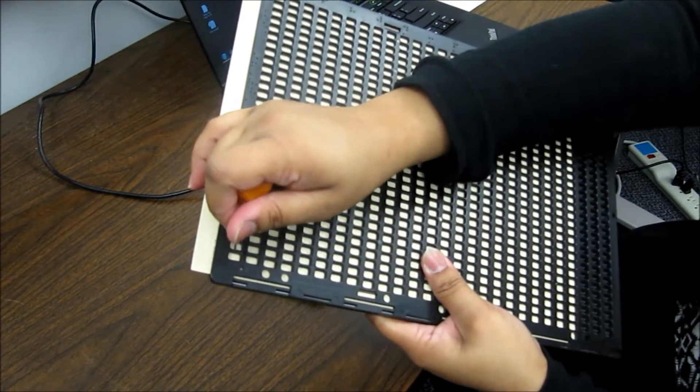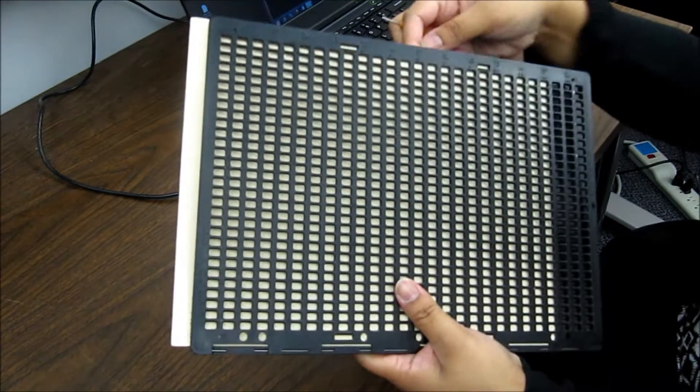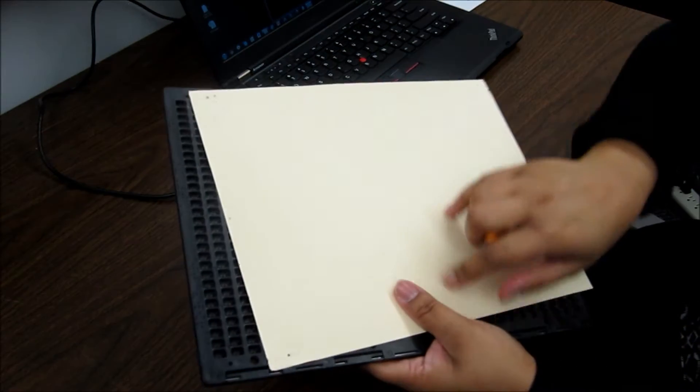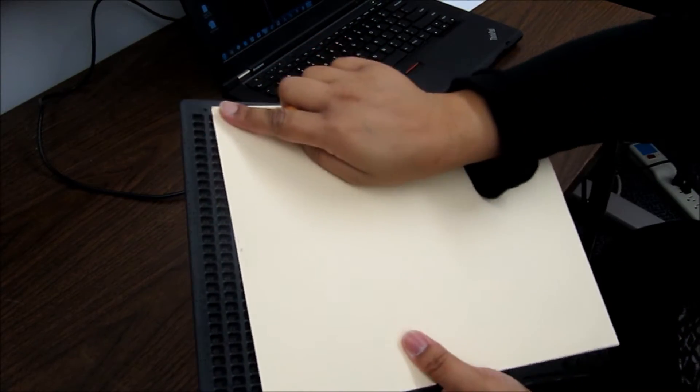Once you emboss the dots that you want, you have to take the paper out, flip it over, and then read what you've written. The dots will be raised on the other side.